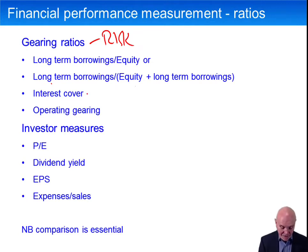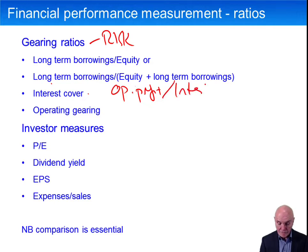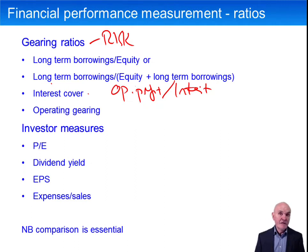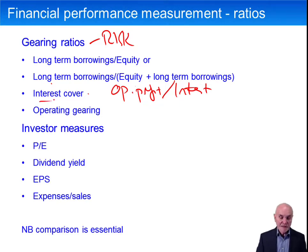Interest cover is particularly useful — it is the number of times you can pay interest, so it's operating profit divided by interest. If you're around 10, no one is going to be very nervous. If you're down at about 1.5, nearly all of your operating profit is consumed by interest; the operating profit just has to fall a little bit, or interest rates rise a little bit, and you could be in trouble meeting obligations. Remember, interest is a problem because it's essentially a fixed cost — you have to pay it whether or not you make profits.